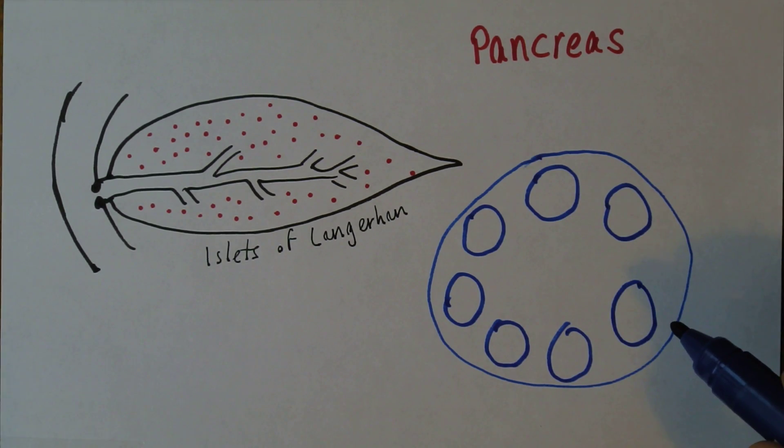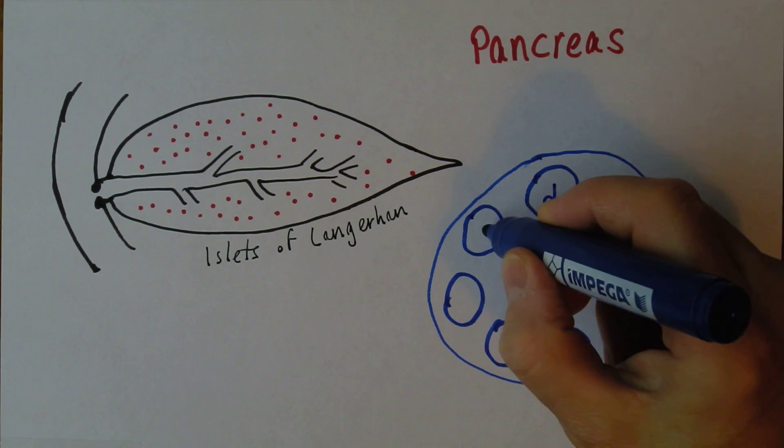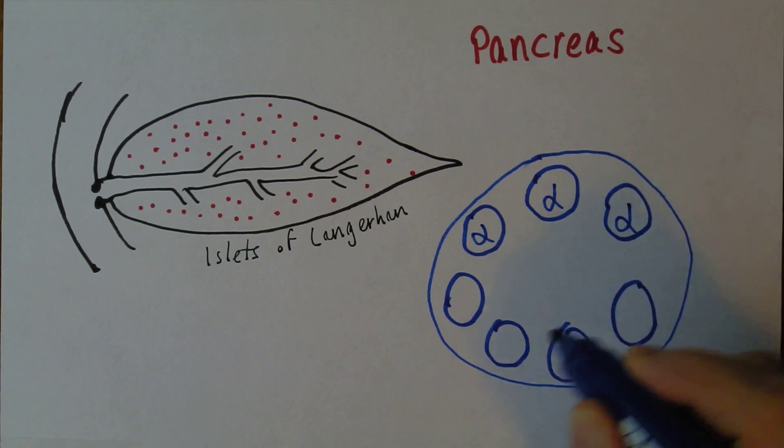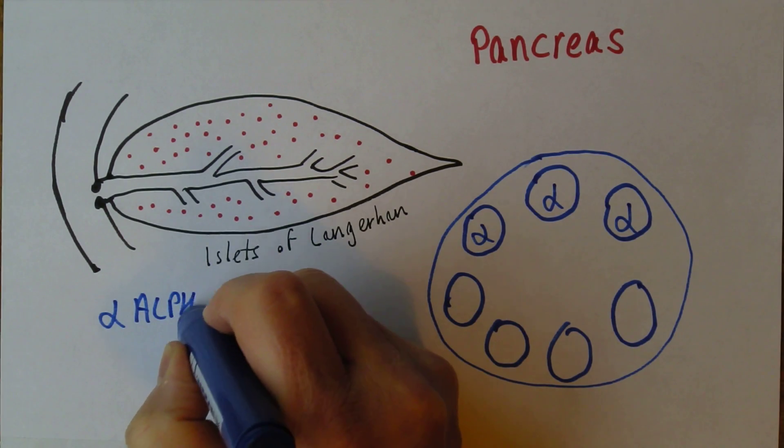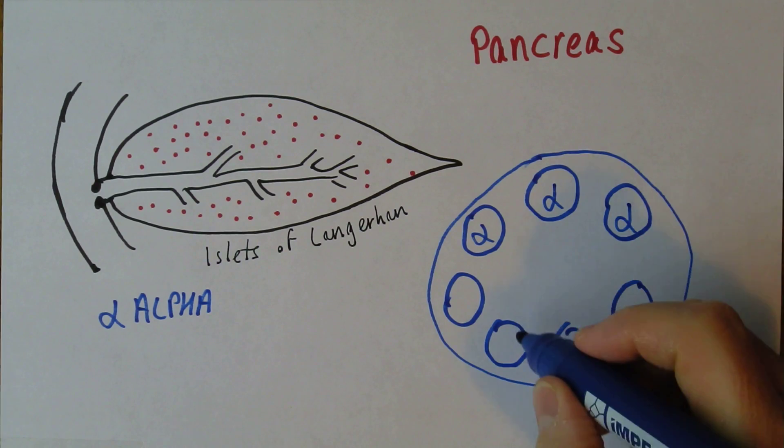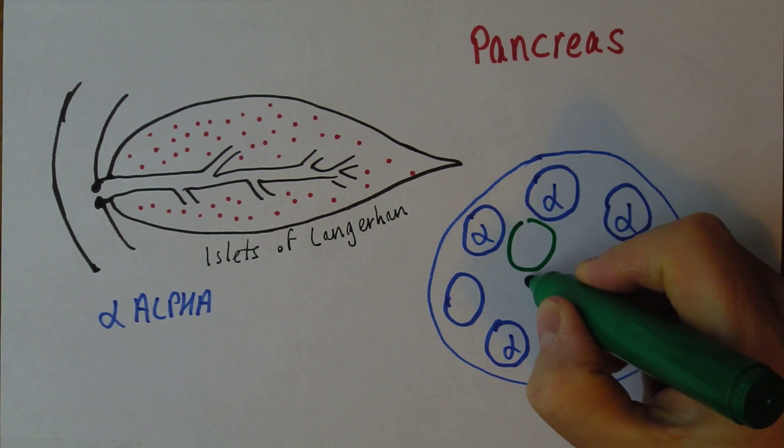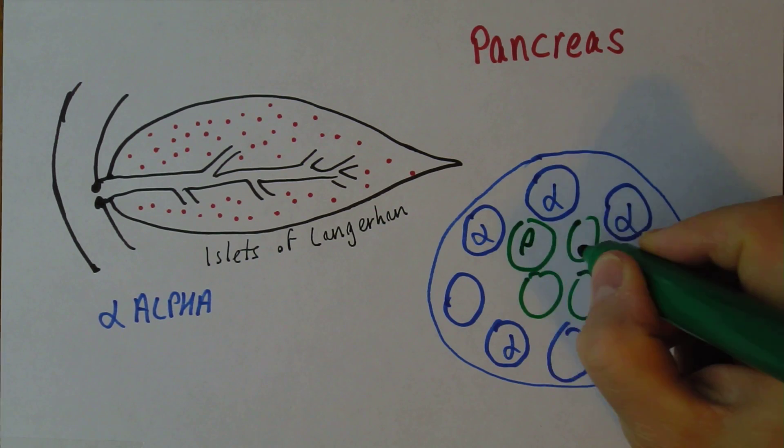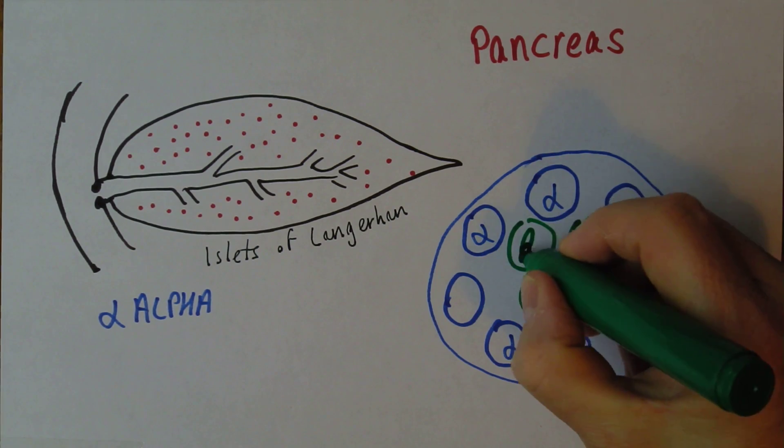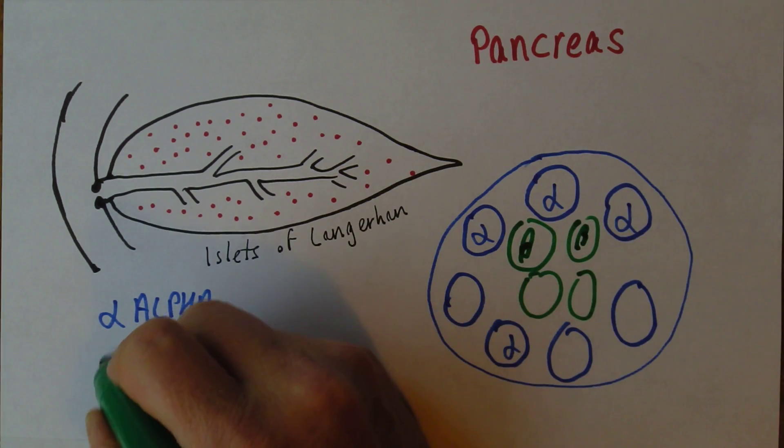Towards the outside, it's more likely you're going to find cells called alpha cells. That's the Greek letter alpha. And towards the core of the islet, you're more likely to find beta cells. That's the Greek letter beta.